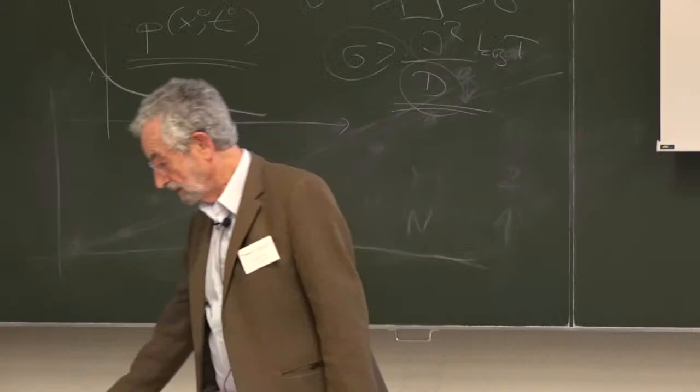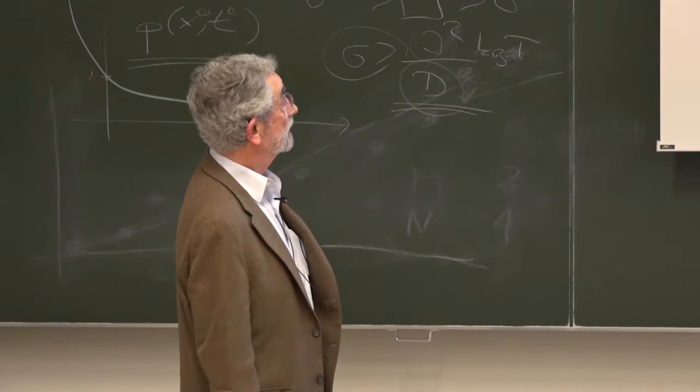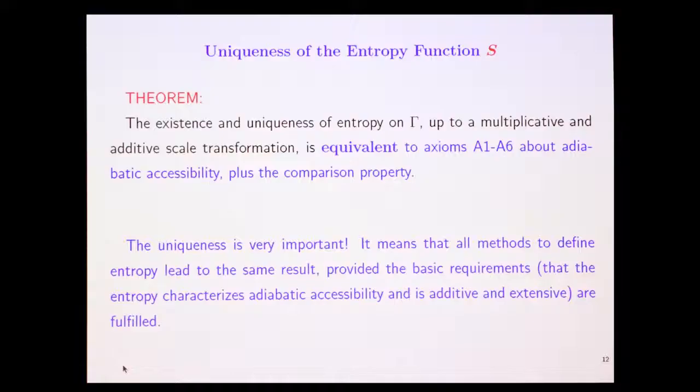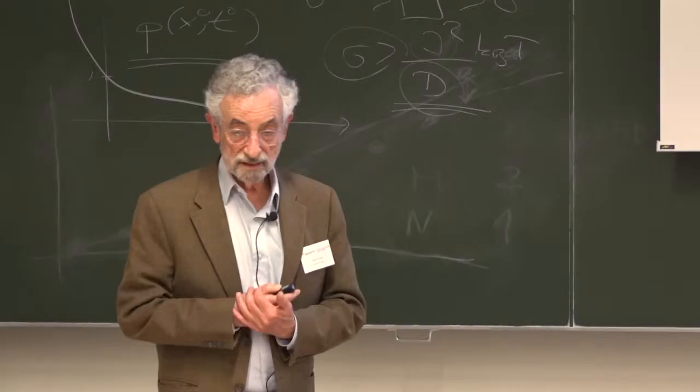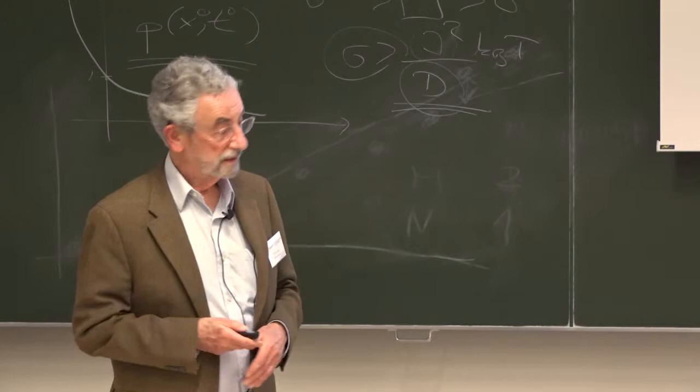All right. We require this property of all state spaces, all systems of the universe. And it is this property together with the zeroth law that calibrates everything together to yield a consistent entropy function. One such that the entropy of two systems together is the sum of the entropies. It's this fact, this comparison fact. Okay. So now, uniqueness of the entropy function. The existence and uniqueness of the entropy function on a state space, up to multiplicative and additive scale transformation. With the additive transformation, we'll use Nernst's third law to set the additive part. But it's equivalent to axioms A1 to A6, which I gave you before, about adiabatic accessibility plus the comparison property. This is the basic theorem. So that's enough to guarantee that the whole system works.